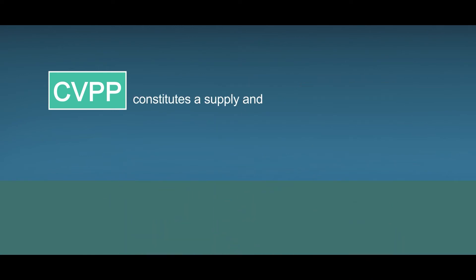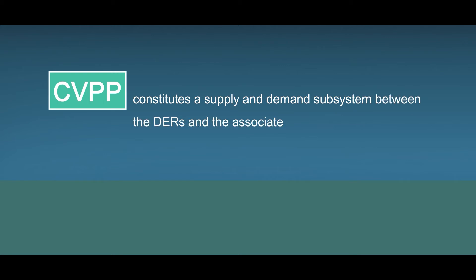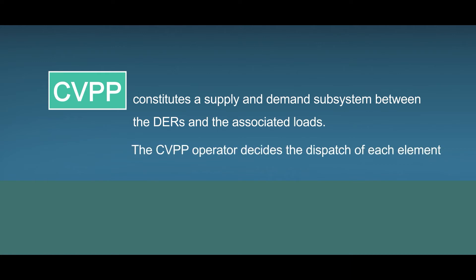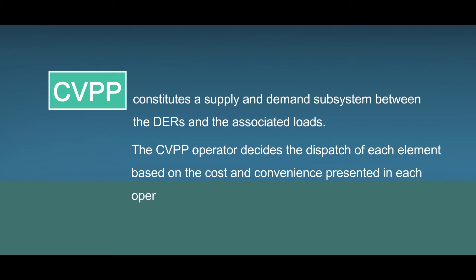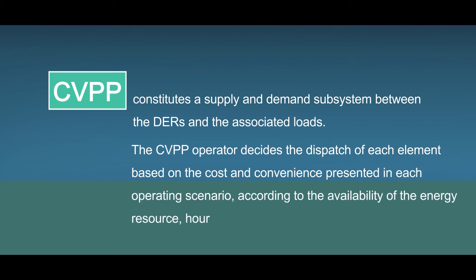Consequently, the commercial virtual power plant constitutes a supply and demand subsystem between the distributed energy resources and the associated loads. The commercial virtual power plant operator decides the dispatch of each element based on the cost and convenience presented in each operating scenario, according to the availability of the energy resource, hourly demand, marginal prices and the spot market.